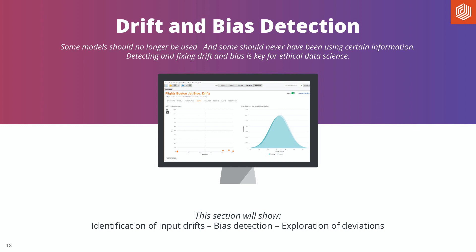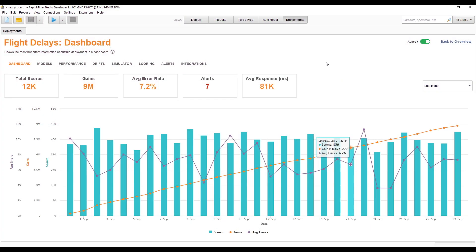Let's turn our attention to model management. Sometimes you build models on a certain dataset and after some time the performance gets worse — often a result of changes in the world. You can detect this by looking at the drift of the inputs, meaning how different the inputs are now versus what they used to be. There can also be bias in the selection of input data. This section will show you how to identify input drifts and do bias detection.